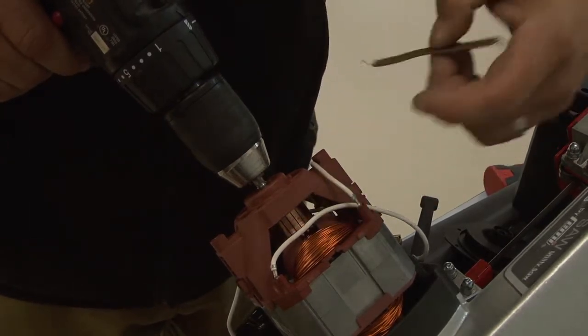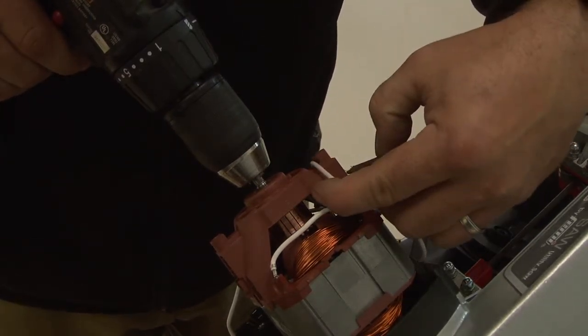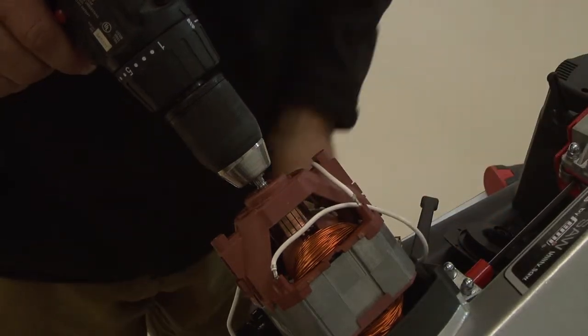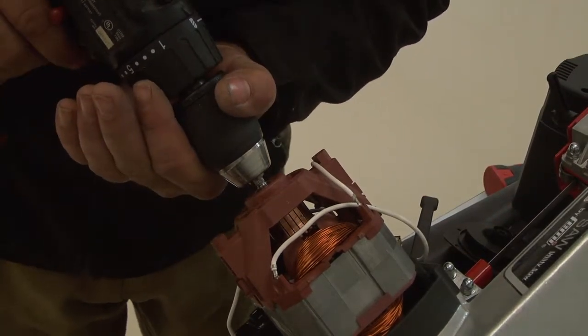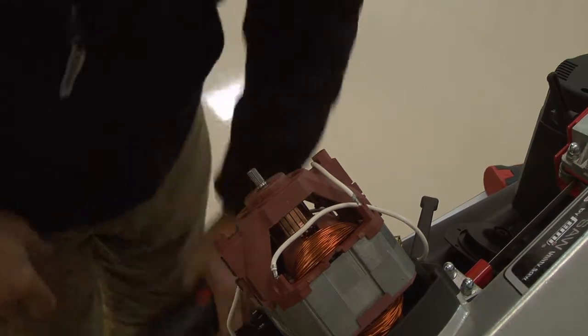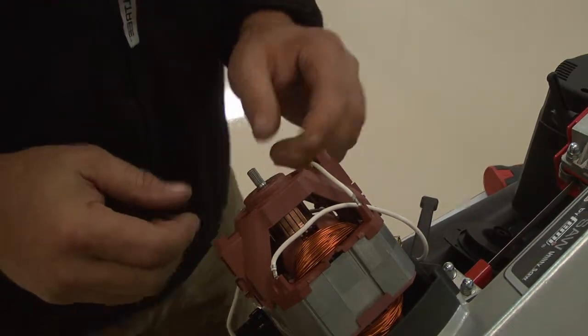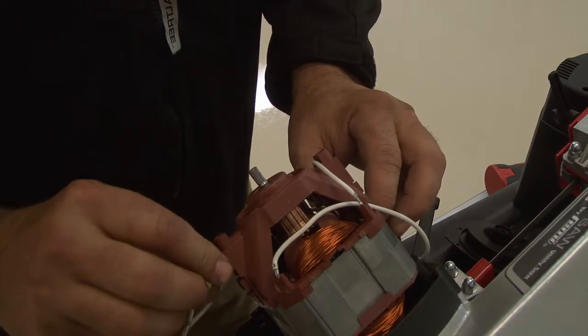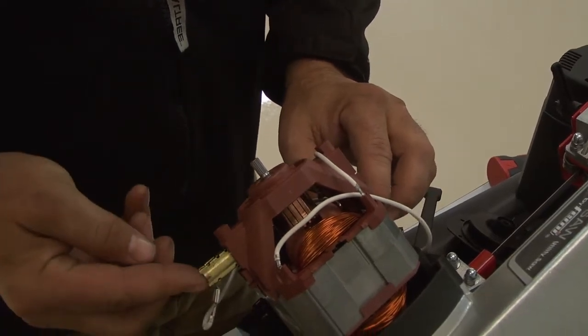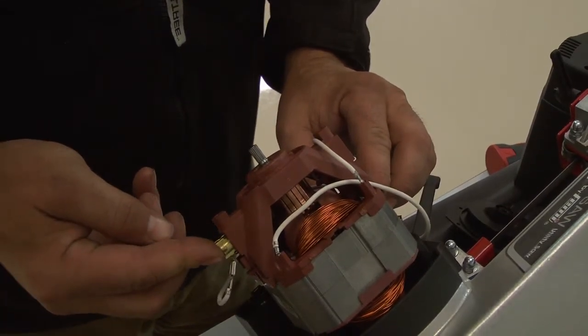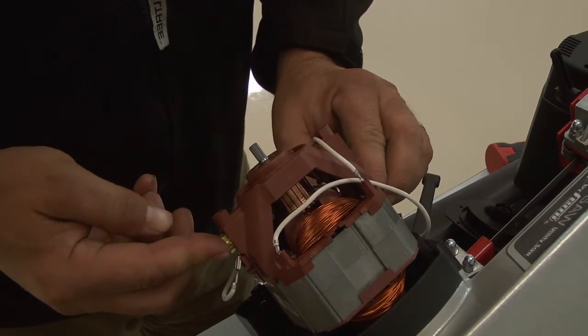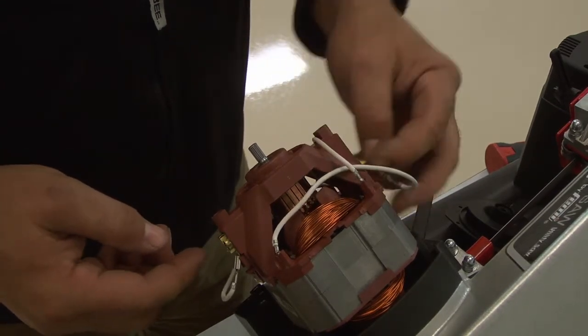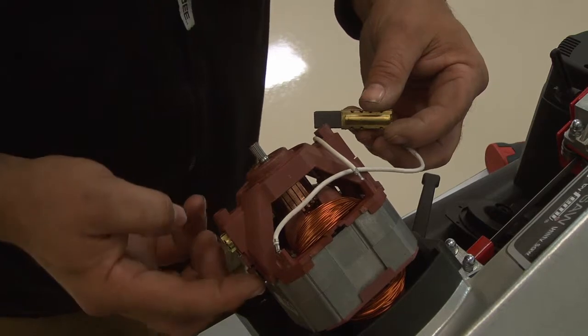It is not necessary to clean the commutator until it is perfectly shiny, but the black glaze should be noticeably removed. When the copper surface on the commutator appears to be substantially cleaner, the motor brushes can be reinstalled by pressing each one in until there is a slight click, and then press the wire leads back against the motor housing.